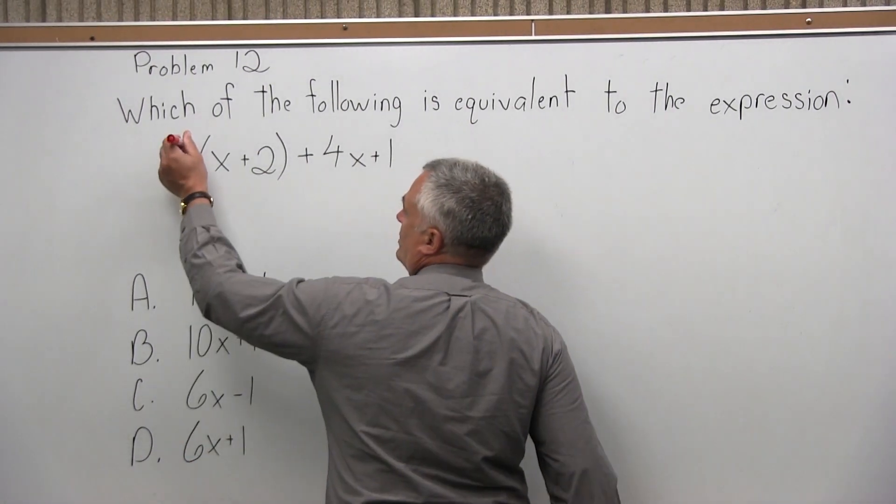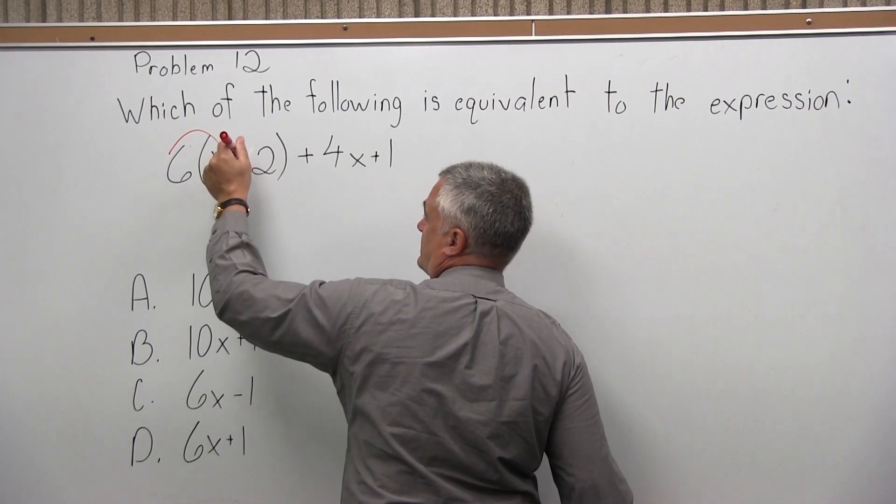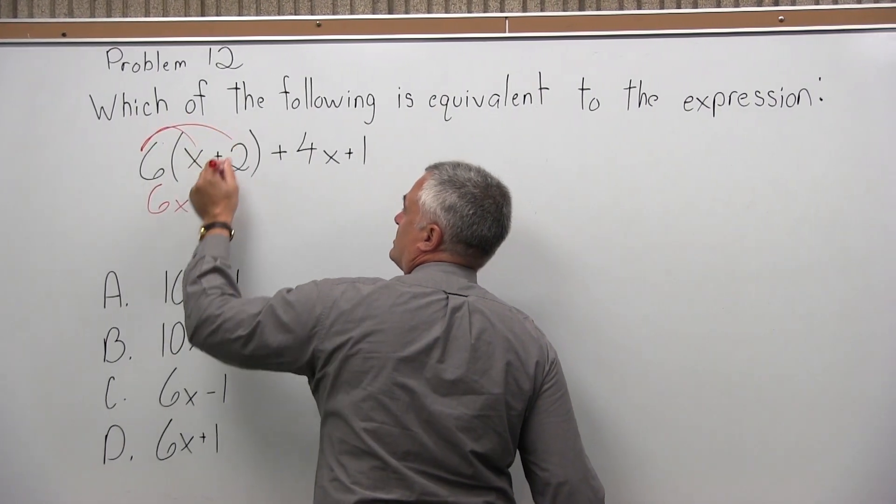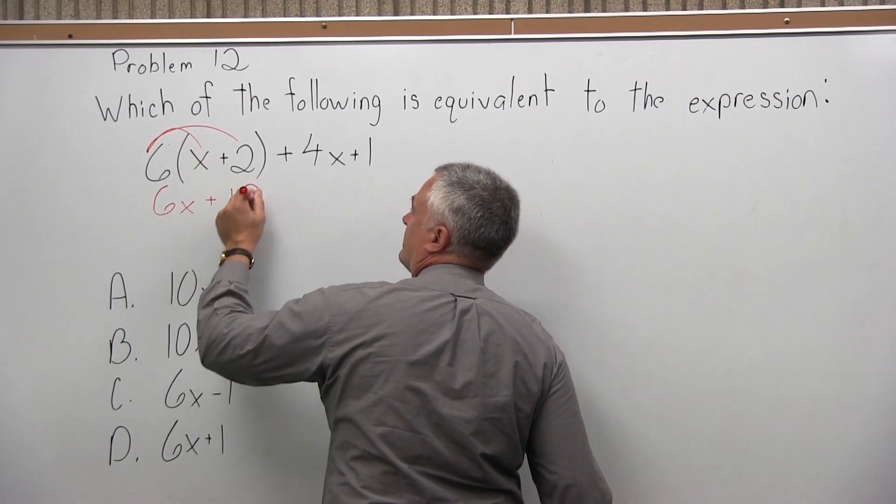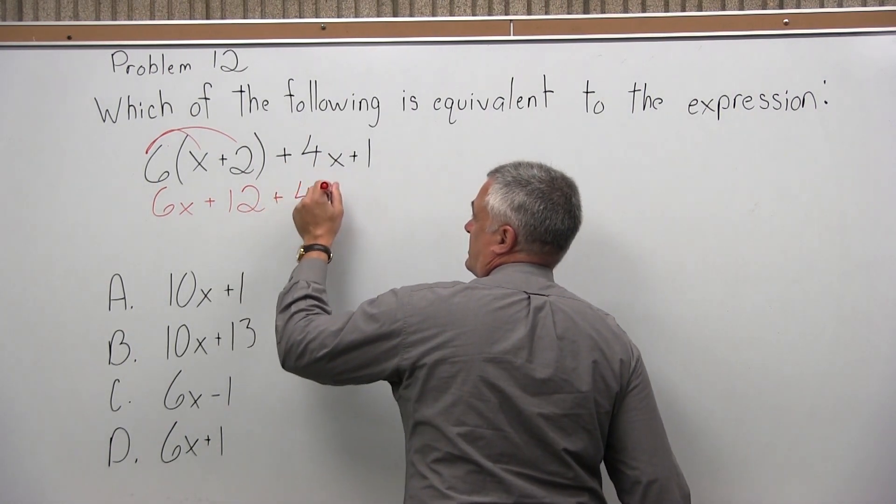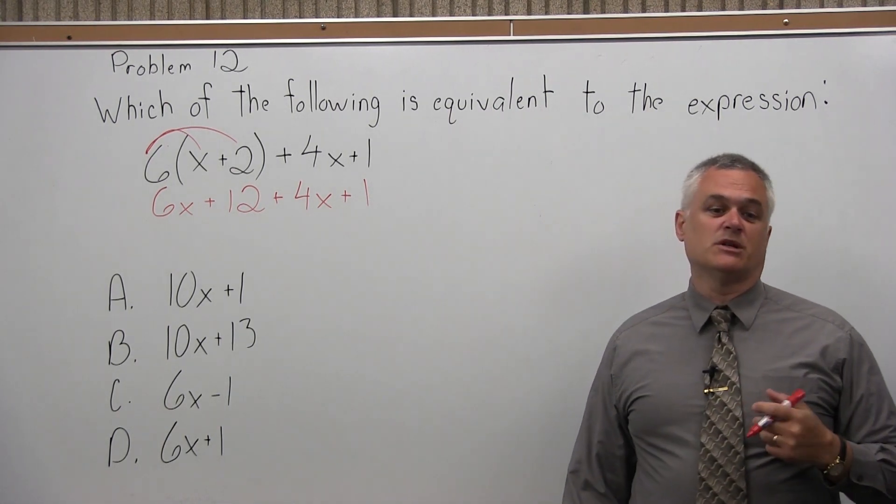So what you do is the number outside the parentheses is 6 times every value in the parentheses. So we're going to do 6 times x is 6x, and then 6 times 2 is 12. And the 4x plus 1 had no parentheses, it can just come right down next to the work we did. So I have 6x plus 12 plus 4x plus 1.